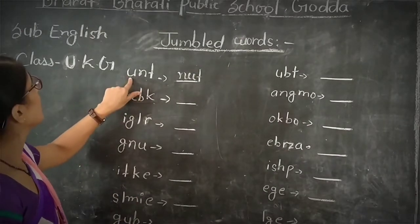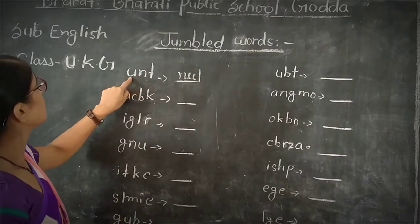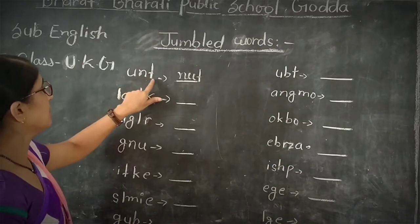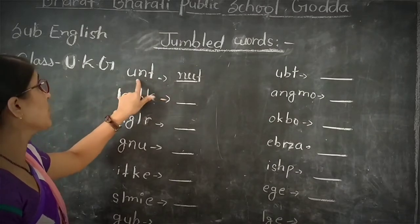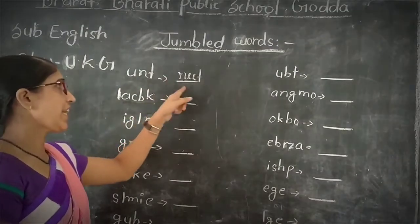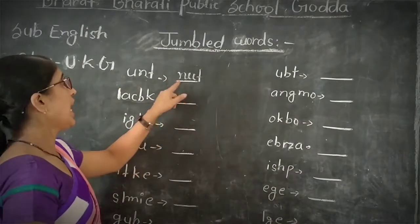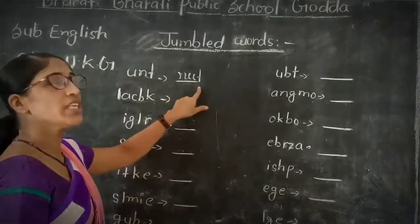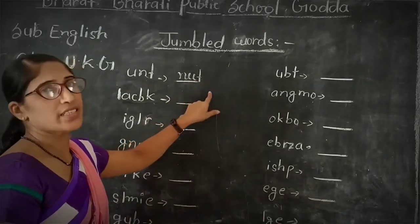There is U and T. This word is wrong. We will write the correct word here. N, U, T — NUT.